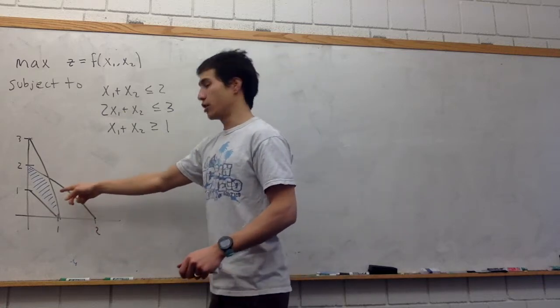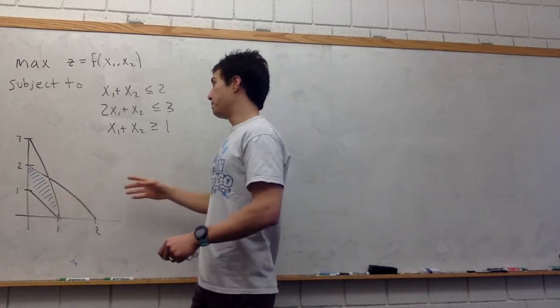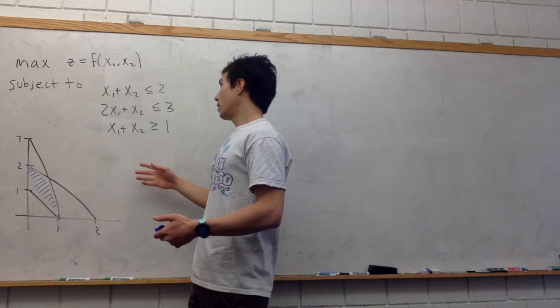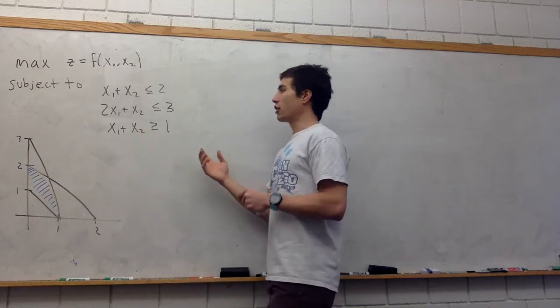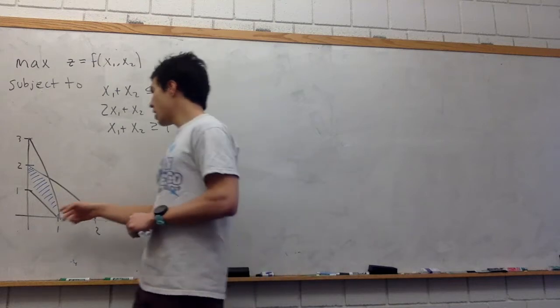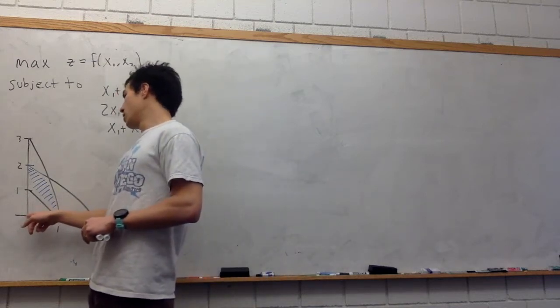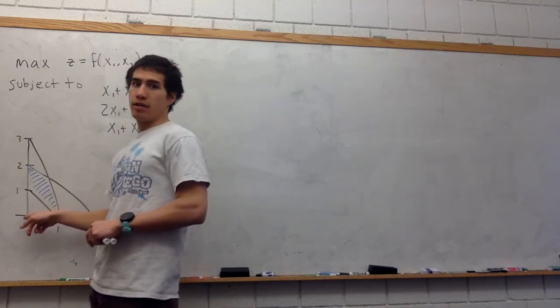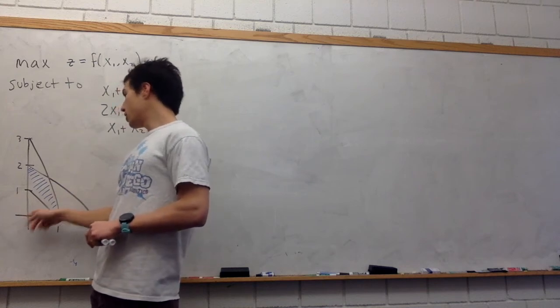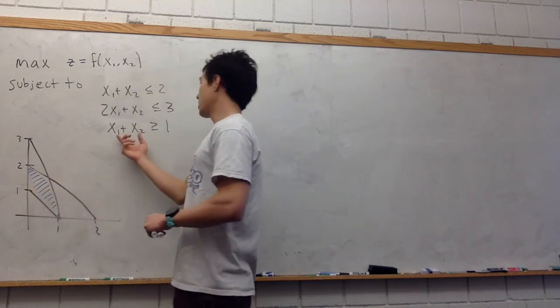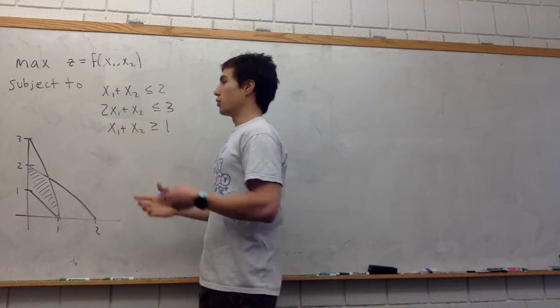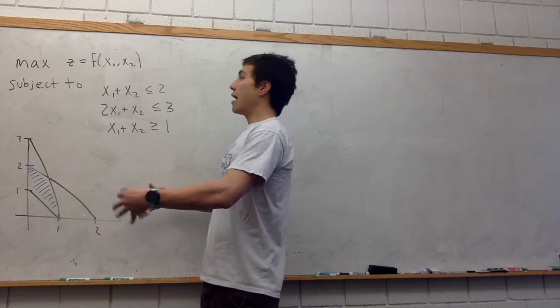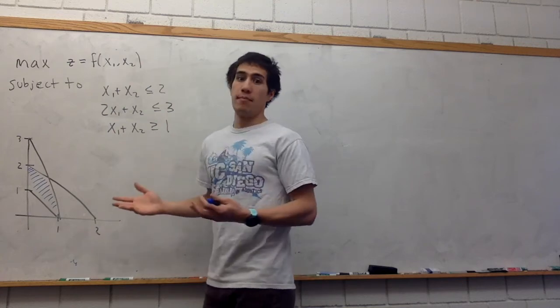I've graphed the feasible region here. It's this blue region. The issue is that we can't run the simplex algorithm like normal because we normally start at the origin and then run our simplex algorithm. You can see here the origin is not in this feasible region because of this constraint x1 plus x2 has to be greater than or equal to 1. So we're going to get around this problem by using the Big M method.